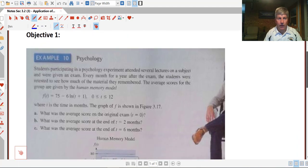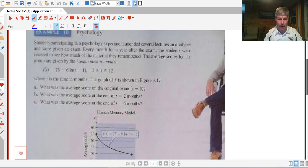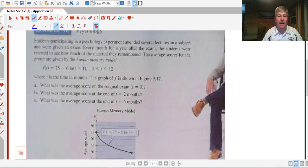Here in example 10 from the book, we've got a function that predicts the score of a memory test. The average scores for the group in the human memory model between 0 and 12 months is 75 minus 6 times the natural log of t plus 1, where t is the value in months.